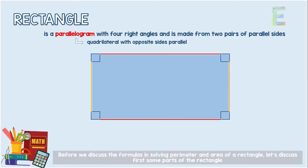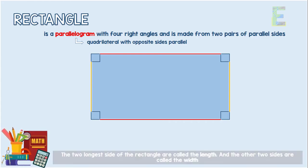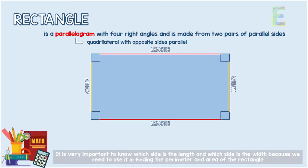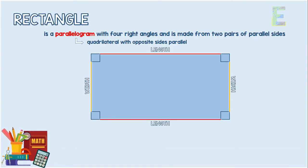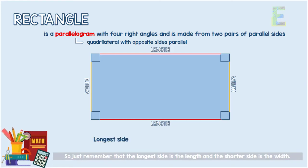Before we discuss the formulas in solving perimeter and area of a rectangle, let's discuss first some parts of the rectangle. The two longest sides of the rectangle are called the length, and the other two sides are called the width. It is very important to know which side is the length and which is the width, because we need to use them in finding the perimeter and area. Just remember that the longest side is the length and the shorter side is the width.